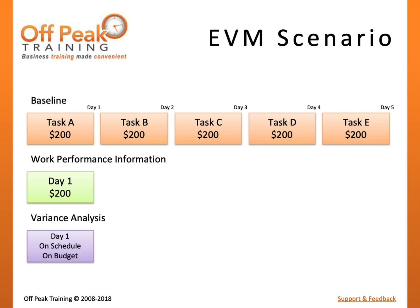On Day 2, you complete Task B at a cost of $300. Performing variance analysis now reveals that we are still on schedule but are over budget.